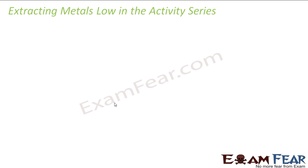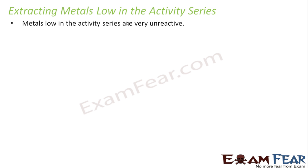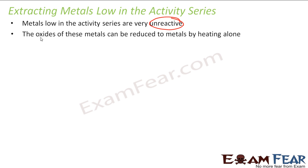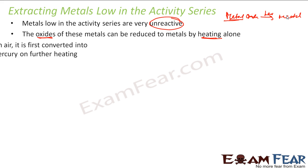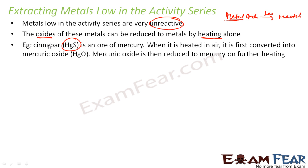Let us start with the low reactive elements of metal. These metals are very unreactive, and sometimes if you have oxides of this metal, you can just heat that — just by heating only. If you have metal oxides for the low reactive metals, you just heat it and you get the metal. For example, you have HgS called cinnabar, one of the ores of mercury. When you heat it in the air, it becomes HgO, and when you further heat it, it becomes mercury.